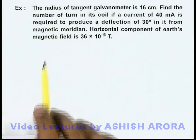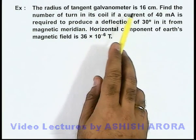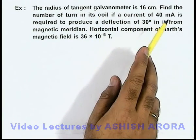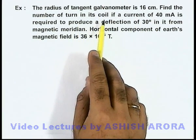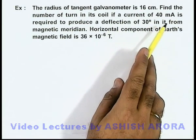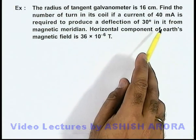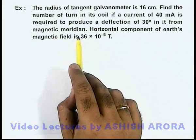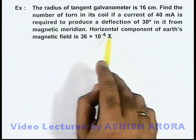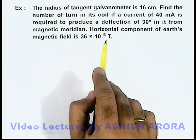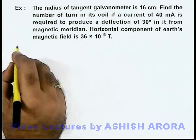In this example, we are given that the radius of a tangent galvanometer is 16 centimeters. We are required to find the number of turns in its coil if a current of 40 milliamperes is required to produce a deflection of 30 degrees from the magnetic meridian. We are also given the horizontal component of Earth's magnetic field at this point, which is 36 microtesla.